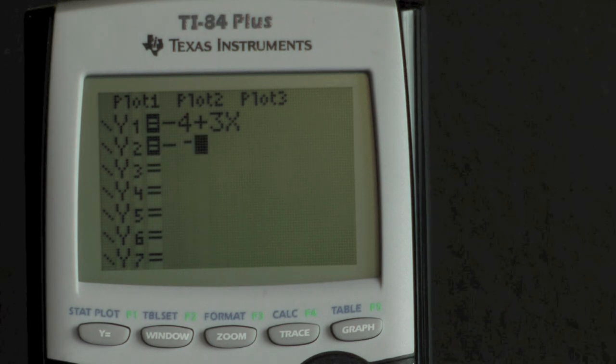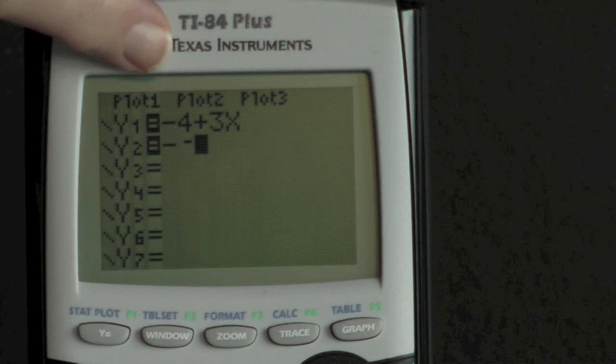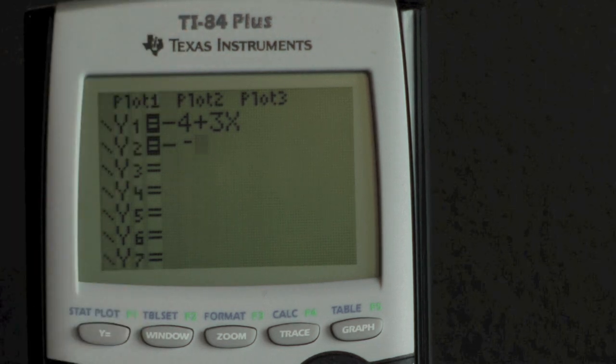Minus keys are generally used in the middle of an expression, and negative keys are generally used at the beginning. So in this instance, we have an equation that is supposed to be -4+3x. In a closer look, though, the negative sign looks long,